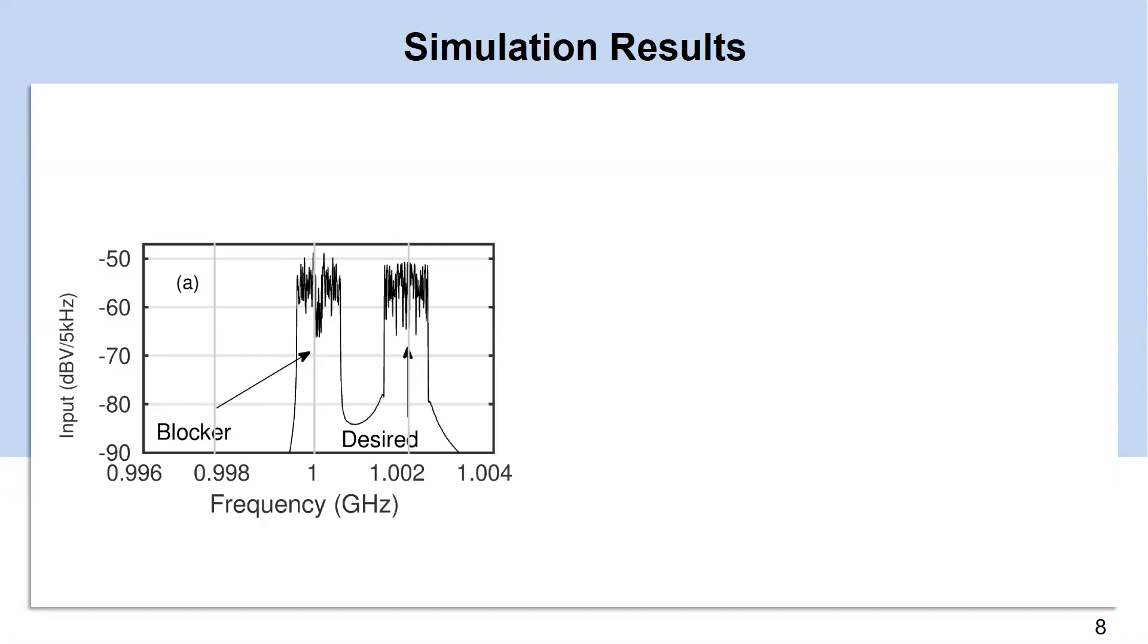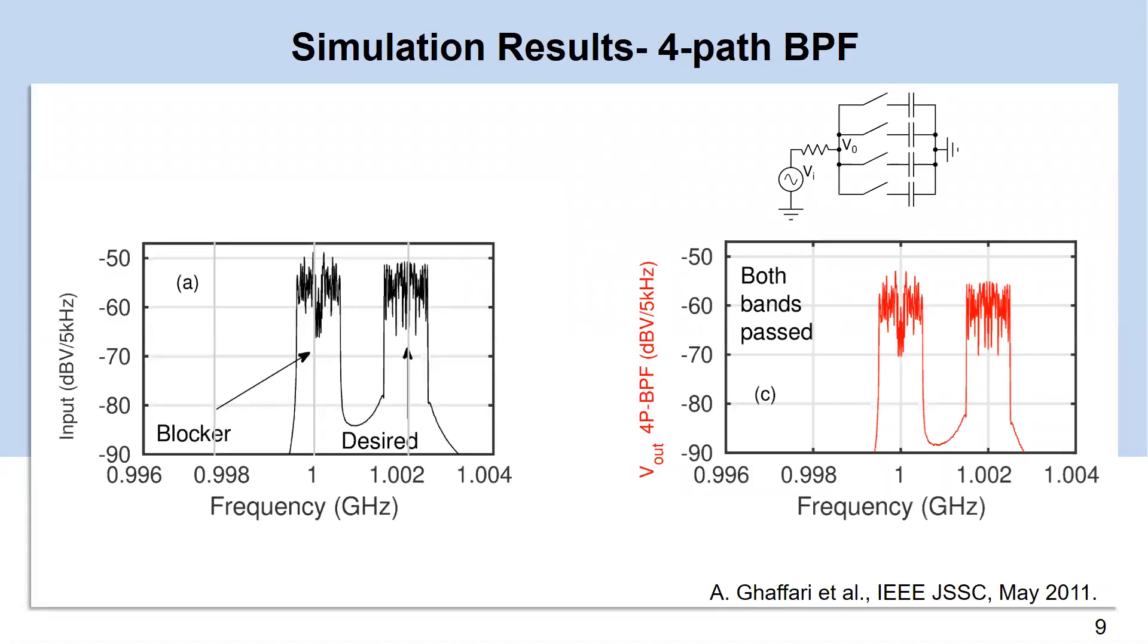We compare our architecture with standard 4-path band-pass filter. For fair comparison, the total capacitance was kept constant at 200 pF which gives bandwidth of 4-path filter 31 MHz. The standard 4-path band-pass filter will pass both blocker and desired band.